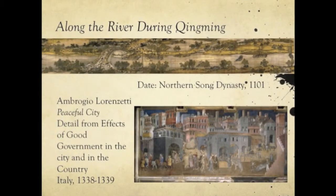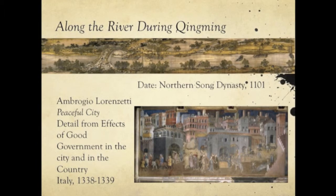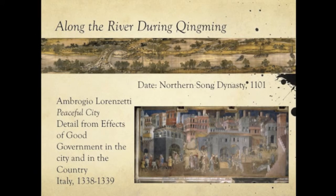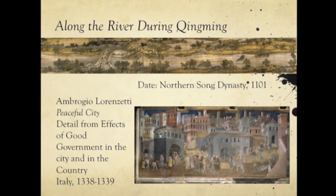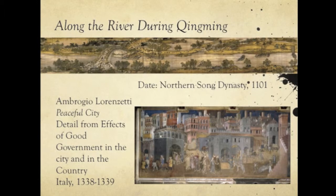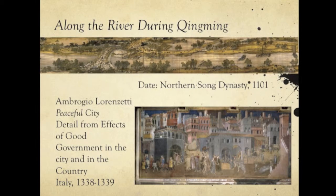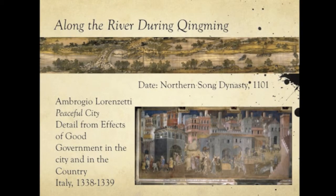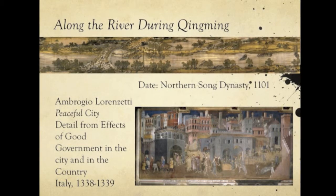Along the River During Qingming Festival is the most well-known painting among Chinese, and an interesting painting to discuss. This 5.28-meter-long painting has three major sections. The right section shows the rural area of the city, with crop fields and unhurried rural folk in bucolic scenery. In the middle section, there are businesses of all kinds; vendors extend all along the great bridge, called Hongqiao — the rainbow bridge. The left half is the urban area around the city gate, where more economic activities are happening.